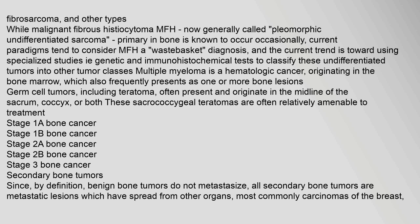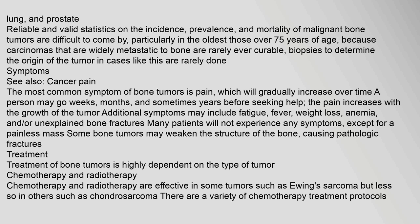Secondary bone tumors: By definition, benign bone tumors do not metastasize, so all secondary bone tumors are metastatic lesions which have spread from other organs, most commonly carcinomas of the breast, lung, and prostate. Reliable statistics on the incidence, prevalence, and mortality of malignant bone tumors are difficult to come by, particularly in those over 75 years of age, because carcinomas that are widely metastatic to bone are rarely curable and biopsies to determine the tumor's origin are rarely done.